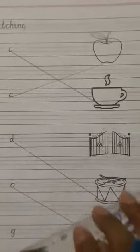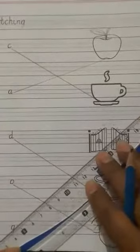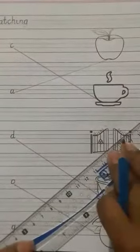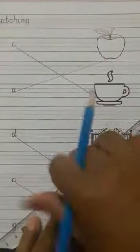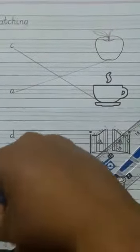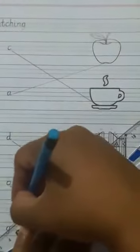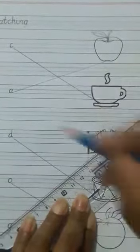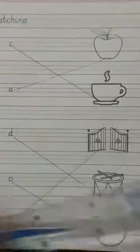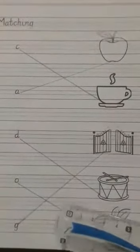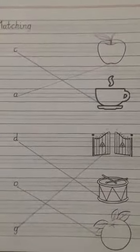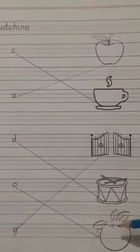And our last sound is G. G, gate. So girls, set the ruler and match G with gate. Okay girls, after completing the matching, girls, do neat and good coloring in the pictures.